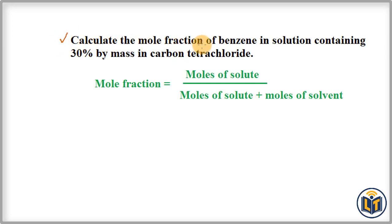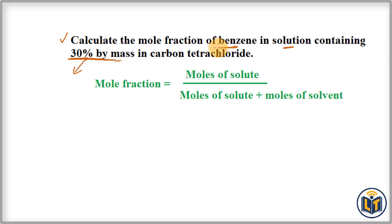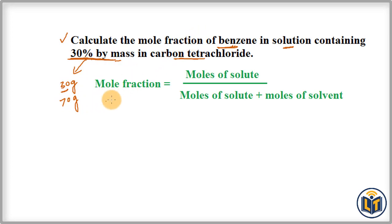The problem states: calculate the mole fraction of benzene in a solution containing 30 percent by mass in carbon tetrachloride. This means benzene is added to carbon tetrachloride to make a solution. 30 percent by mass means the mass of benzene is 30 grams, and the mass of carbon tetrachloride will be 100 minus 30, which equals 70 grams.